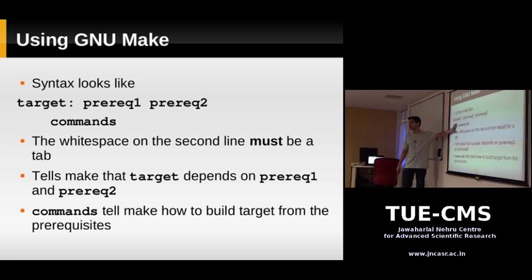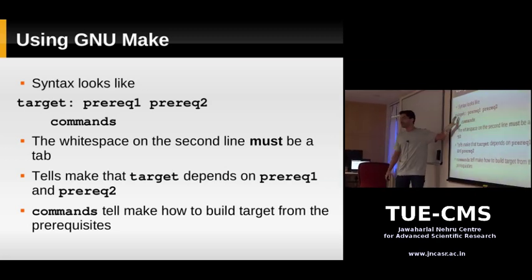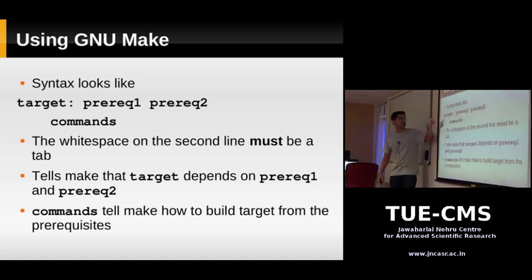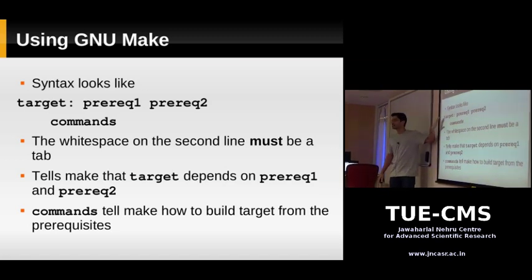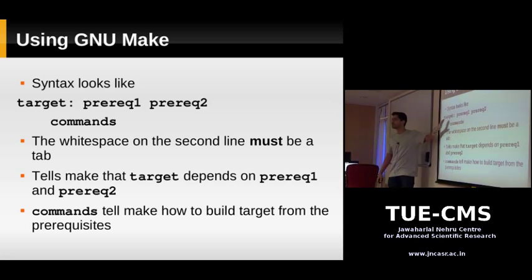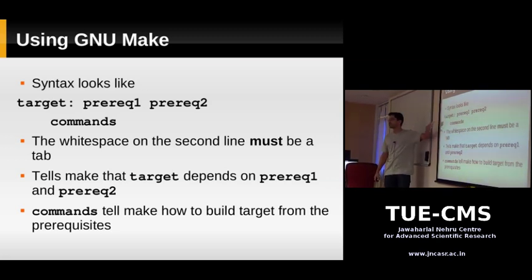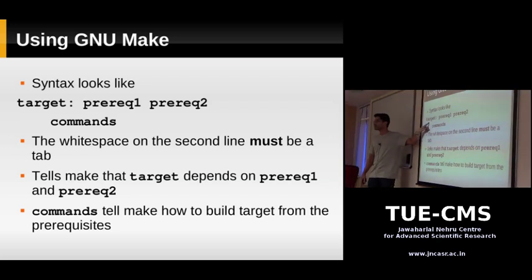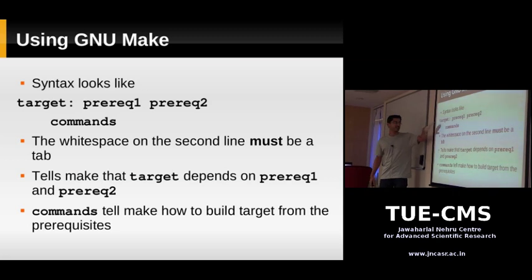A rule says that the target has a dependency on prerequisite 1 and prerequisite 2 — the target file depends on those files. If the target does not exist or is out of date, make rebuilds it using the specified command. So we're telling make: in case the target doesn't exist or is out of date, rebuild it using these commands.